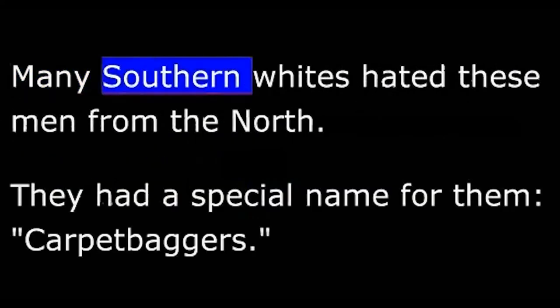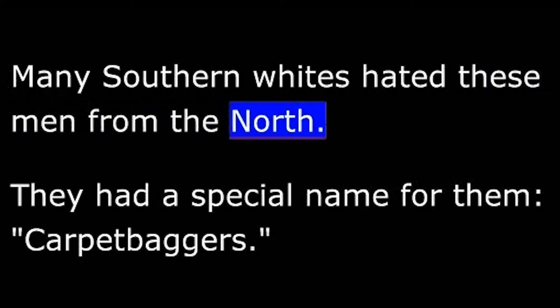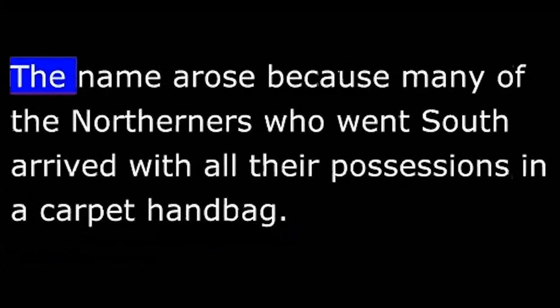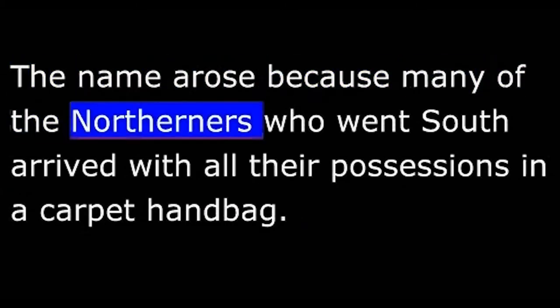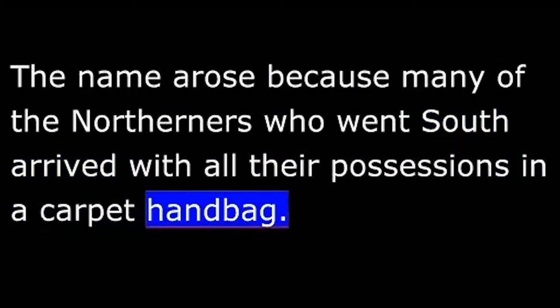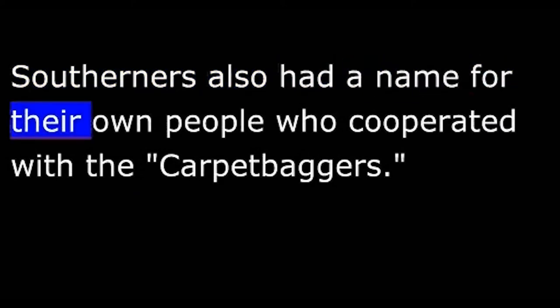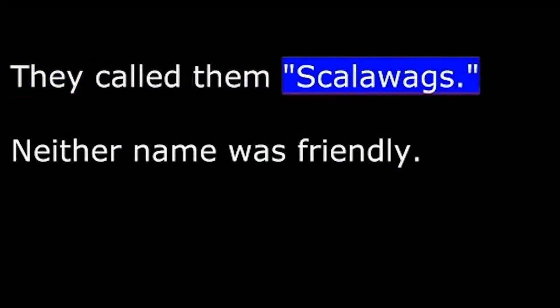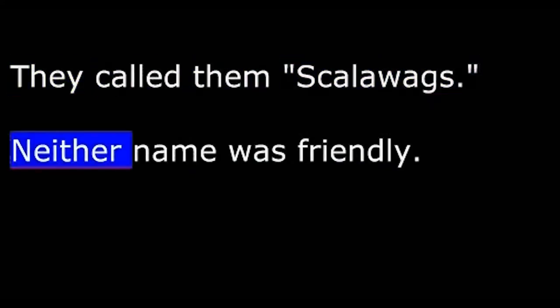The radicals did not rest with changes in the law. They also sent their supporters south to organize blacks for the Republican Party. Many Southern whites hated these men from the North. They had a special name for them: Carpetbaggers. The name arose because many of the Northerners who went south arrived with all their possessions in a carpet handbag. Southerners also had a name for their own people who cooperated with the Carpetbaggers. They called them Scalawags. Neither name was friendly.